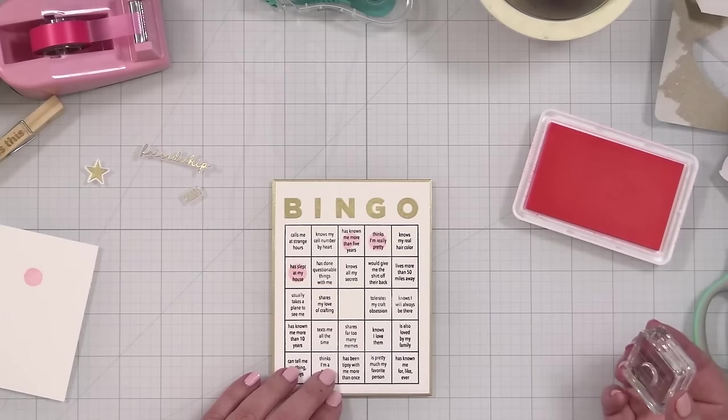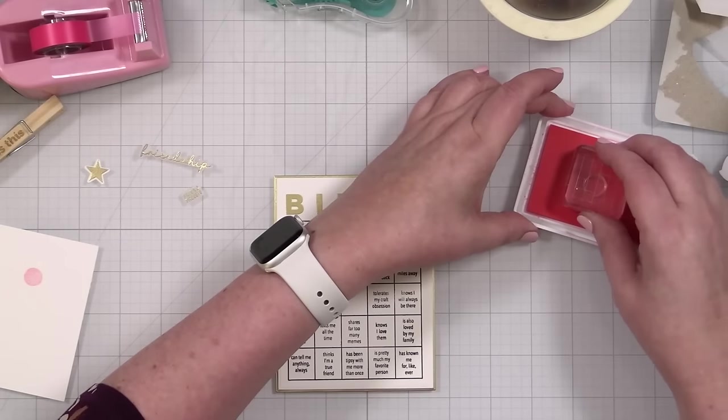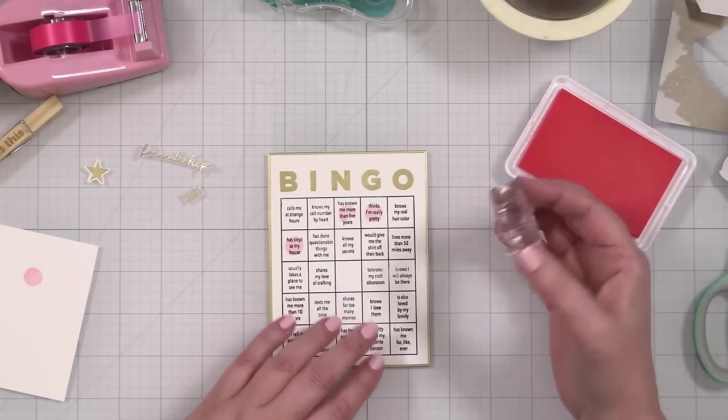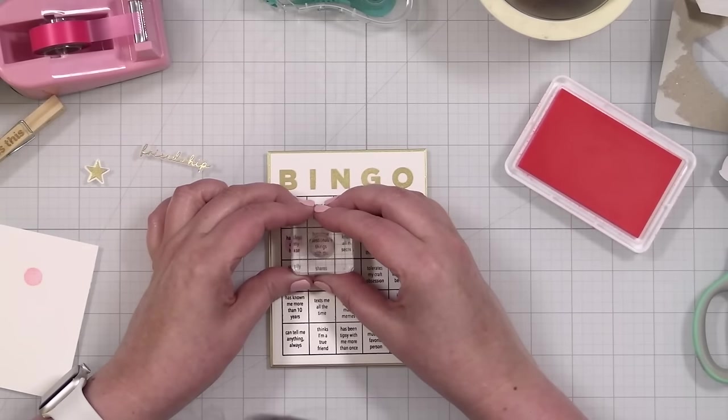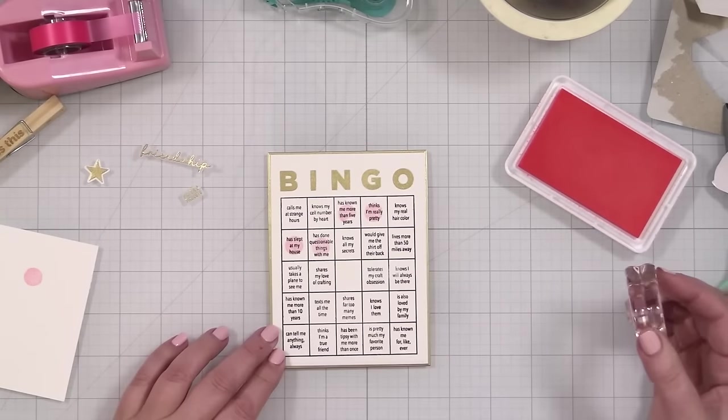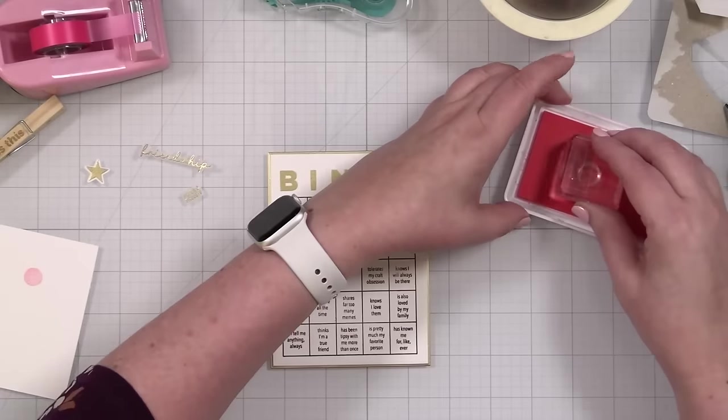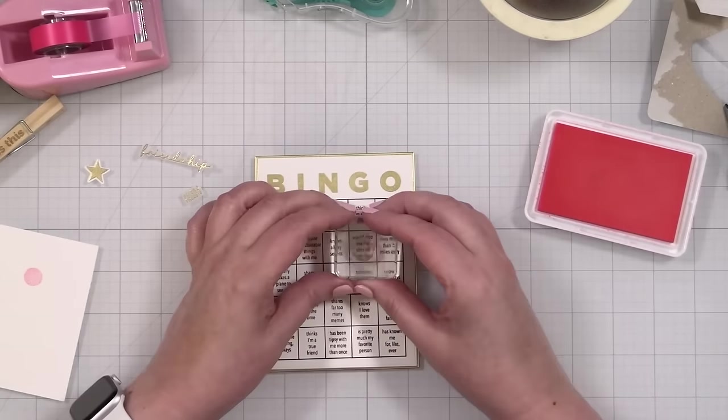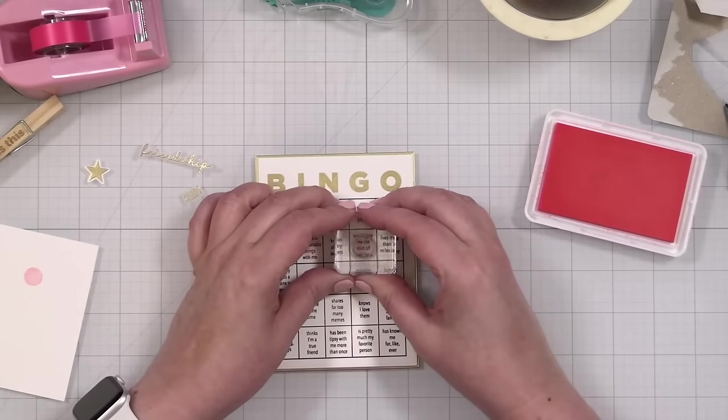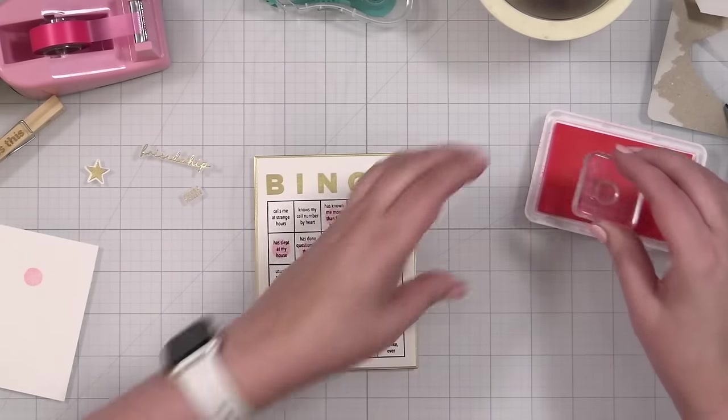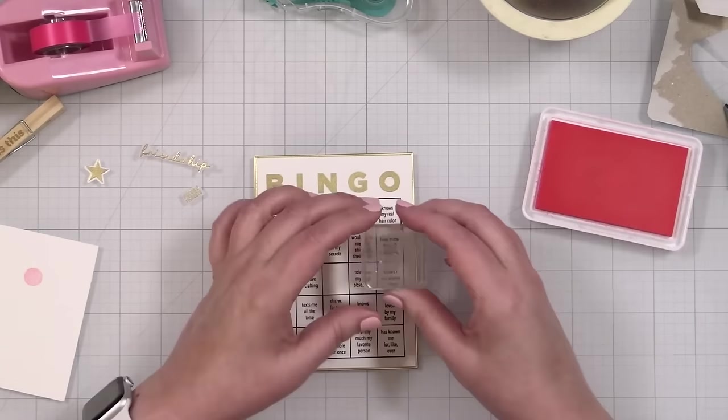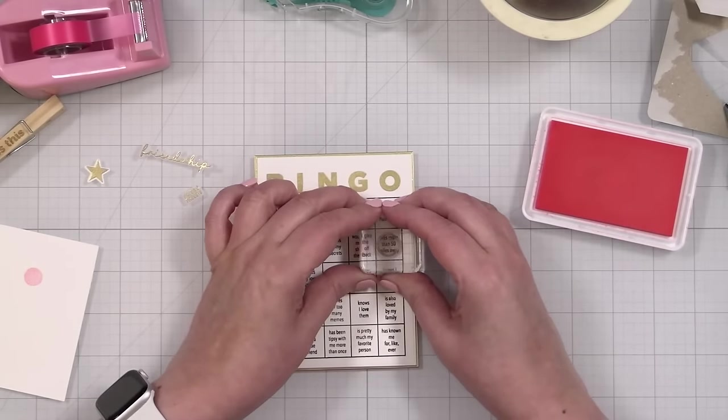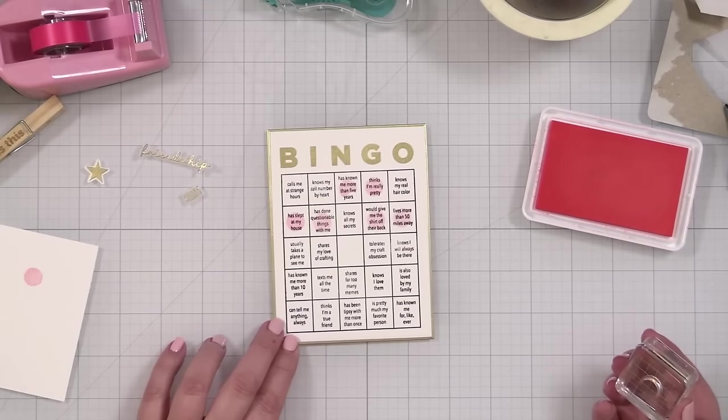Make sure we get ink on all of it. Does think I'm really pretty. Okay. Kind of rock it a bit. There we go. And these don't have, and does definitely knows my real hair color. No, because that, of course she does. You can see it has slept at my house. Yes. Has done questionable, honestly on something like this. I think I could do, yeah. Questionable things. That's for sure.